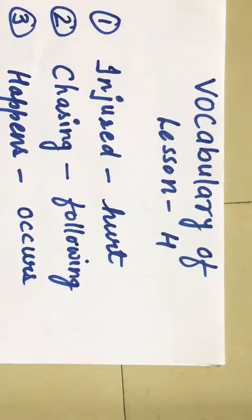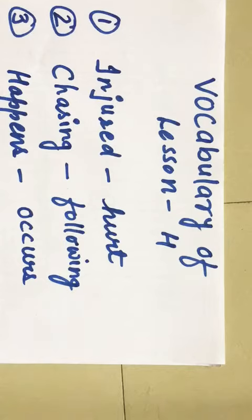Good morning students. Today we will start lesson number 4. It's named Kitty breaks her leg. First, introduction of this lesson. This poem is about a cat named Kitty that gets injured while chasing a mouse. After this, what happened with cat I will tell you when I am going to explain this poem.